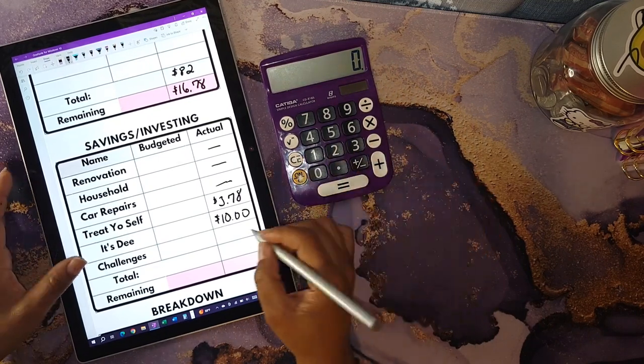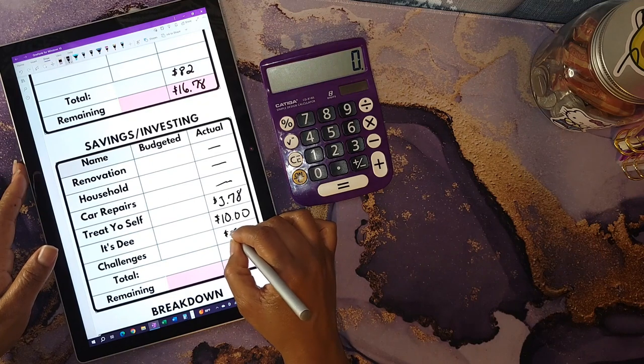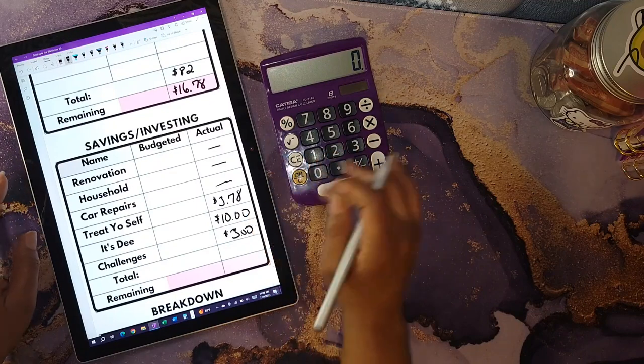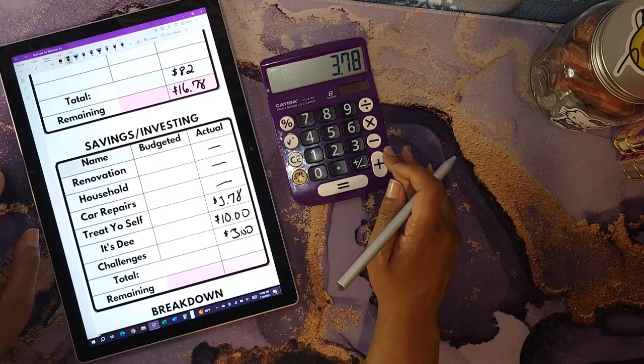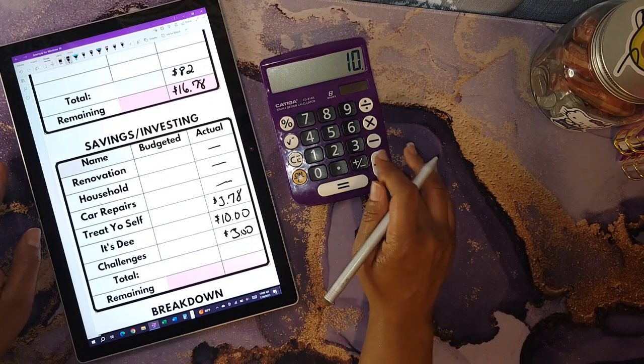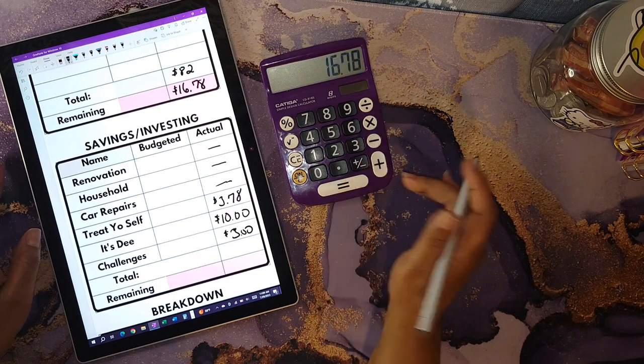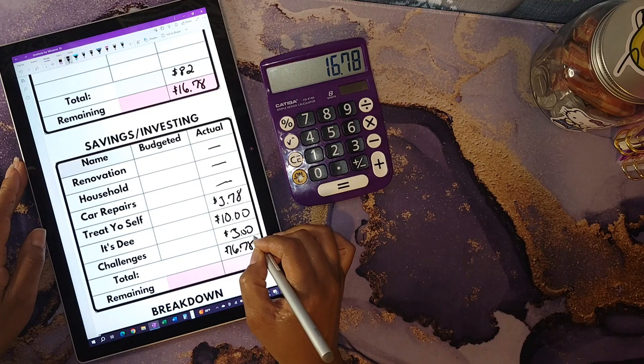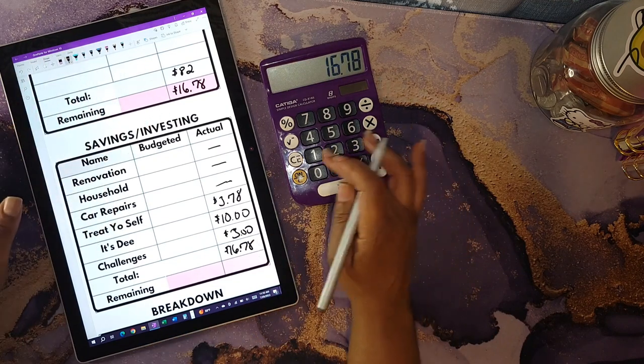Lastly, for challenges, I was able to allocate a total of three dollars. Let's see what this adds up to. $3.78 plus $10 plus $3 equals a total of $16.78. You see up here that's what I had left.